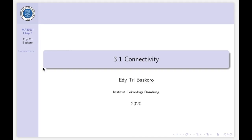Connectivity is one of the basic concepts of graph theory. It asks for the minimum number of vertices or edges that need to be removed to disconnect the graph. It is closely related to the theory of network flow problems. The connectivity of a graph is an important measure of its resilience as a network.